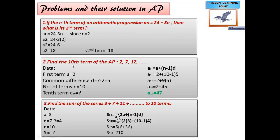We need to find the 10th term, so n = 10. We will use the formula a_n = a plus (n minus 1) into d. Substituting the values: a_10 = 2 plus (10 minus 1) into 5 = 2 plus 9 into 5 = 2 plus 45 = 47. So the tenth term is 47.